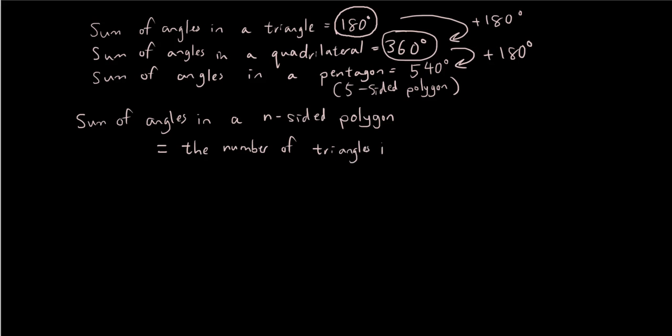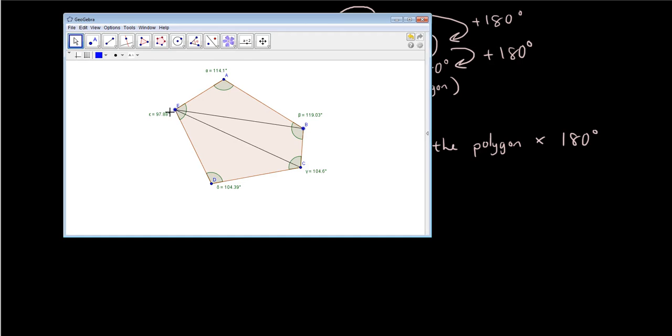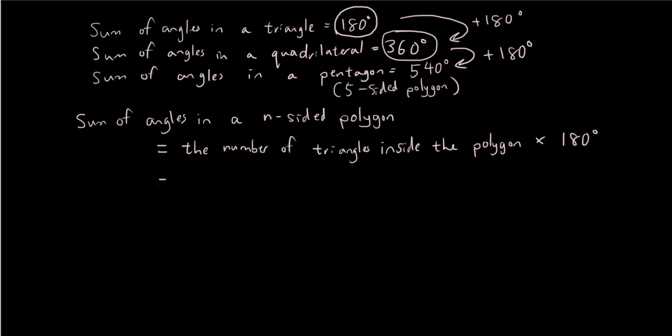The number of triangles inside the polygon times 180 degrees, right? Because each triangle inside the polygon has an angle sum of 180. So for example, in our pentagon, we have three triangles and each triangle has an angle sum of 180. So 180 plus 180 plus 180 is 540, or we can just simply say 180 times 3 is 540. And what we can generalize here is that the number of triangles inside the polygon is equal to n minus 2.